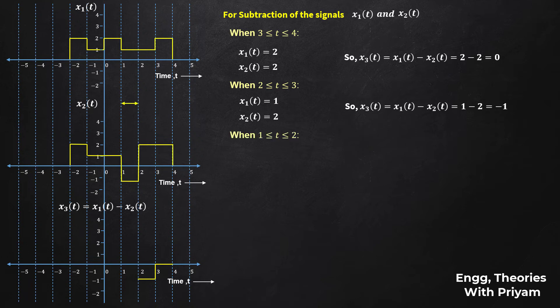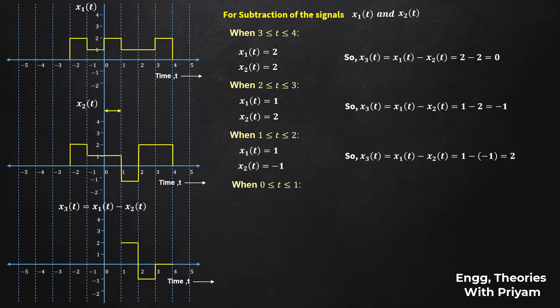When t is in [1, 2], x1(t) = 1 and x2(t) = -1, so x3(t) = 1 - (-1) = 2. When t is in [0, 1], x1(t) = 2 and x2(t) = 1, so x3(t) = 2 - 1 = 1.